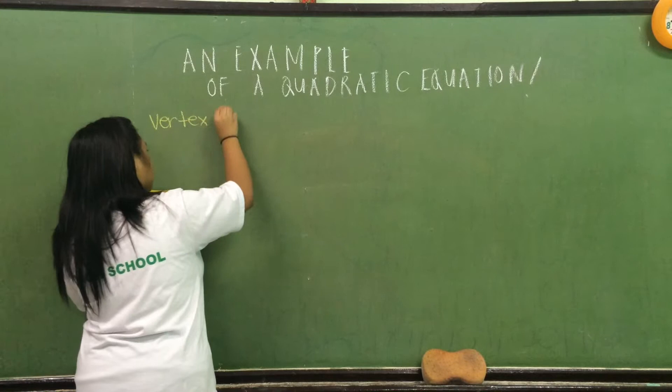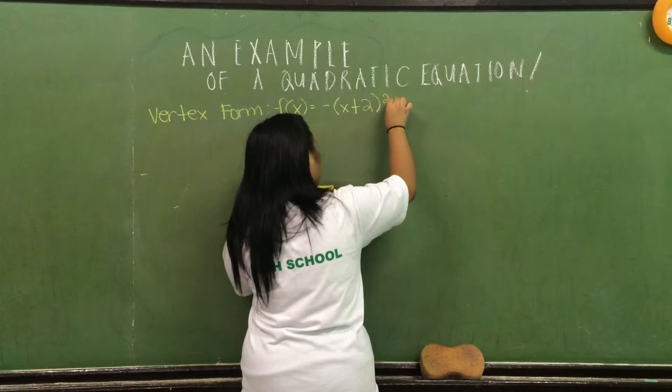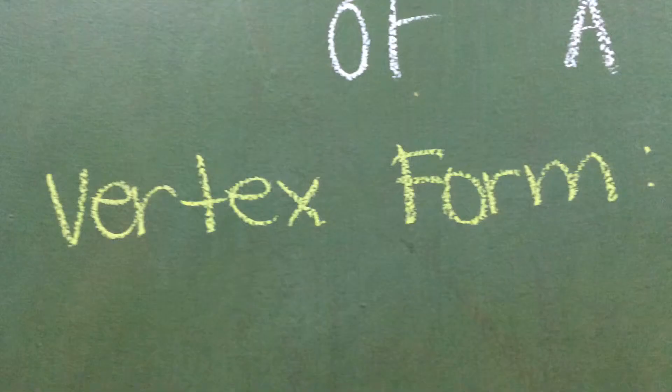Combining everything, we will have -(x + 2)² after we copy the constant -4. And there we have our vertex form.